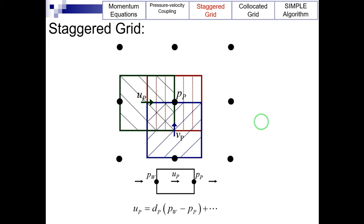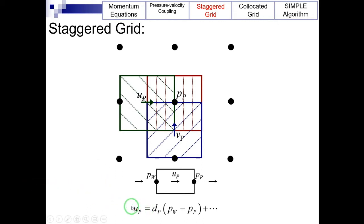In the staggered grid, u_P is the same as u_w in the unstaggered grid. In the unstaggered grid, a linear interpolation had to be performed for the calculation of this velocity component, which created the checkerboard problem. However, in the staggered grid, interpolation is no longer necessary because the velocity is calculated exactly where it is needed.